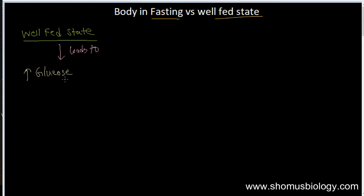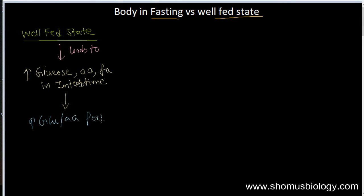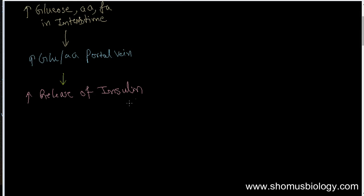Higher levels of glucose, amino acids, and fatty acids are present in the intestine right after digestion of food, which is composed of proteins, fat, and other components. Glucose and amino acids increase in the portal vein, and that leads to the release of a hormone known as insulin. If you want to know more about insulin and glucagon's role in metabolism, watch my insulin and glucagon lecture summary. Insulin starts to be released by the beta cells of the pancreas.